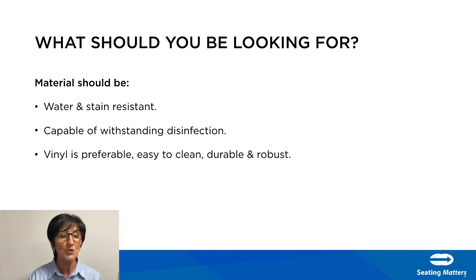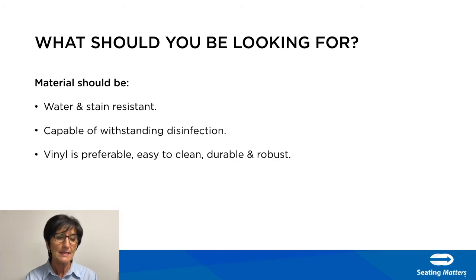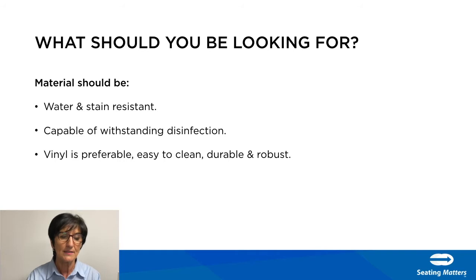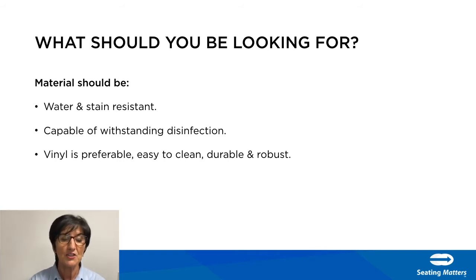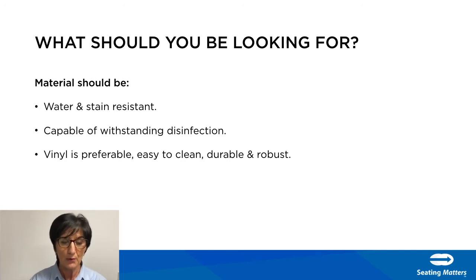So what should you be looking for? When you look at a piece of furniture or equipment, the material needs to be water resistant and stain resistant. It needs to be capable of withstanding disinfection with a chlorine-based disinfectant, and vinyl is preferable as it's easy to clean and also durable and robust.